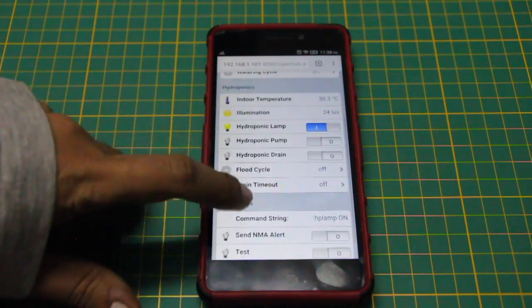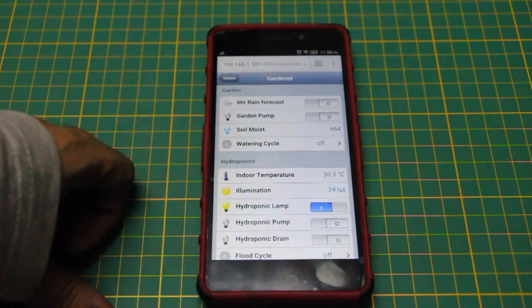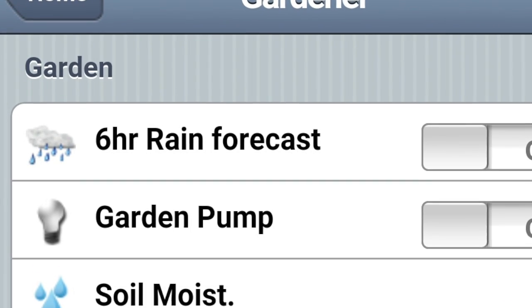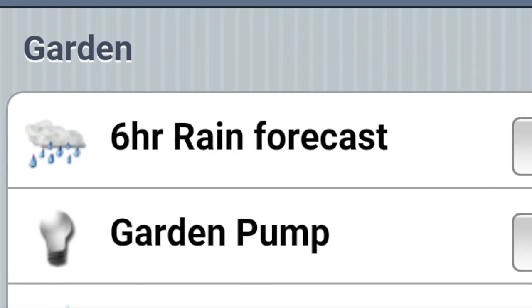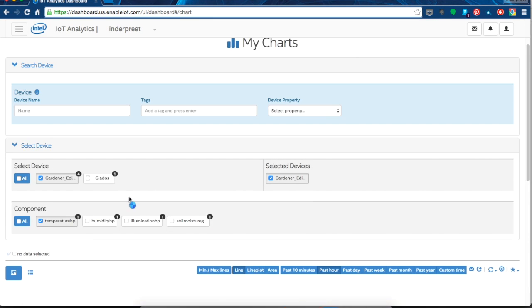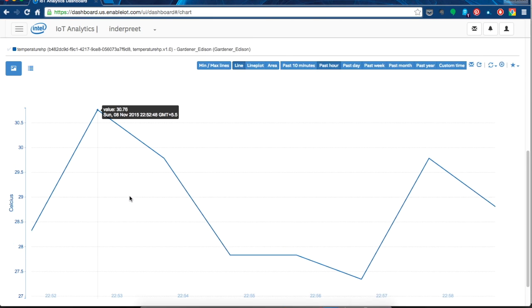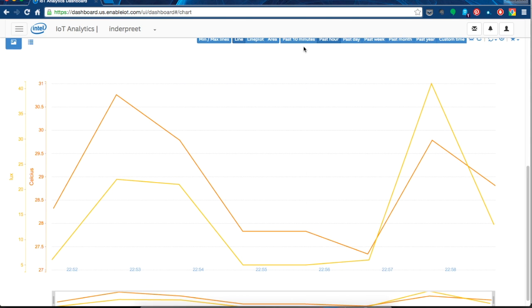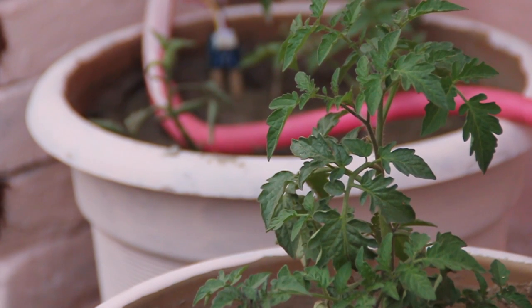It can connect to the internet to get weather forecasts to regulate garden irrigation cycles and it talks to Intel's IoT analytics cloud to store data to the cloud.